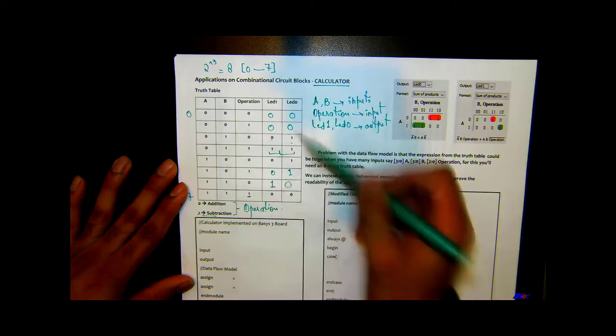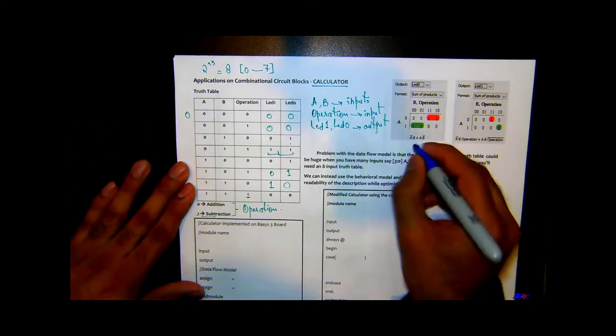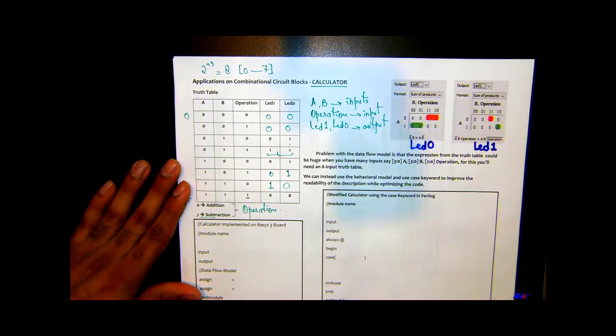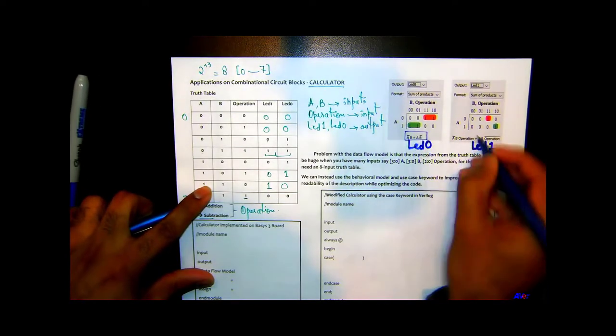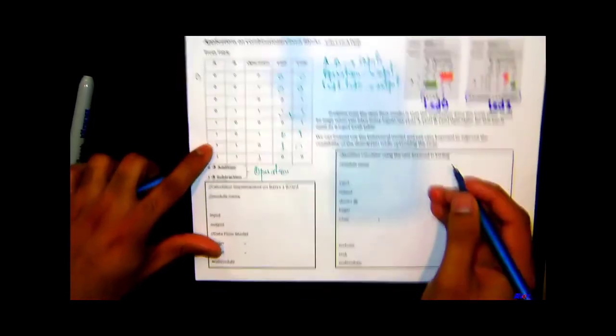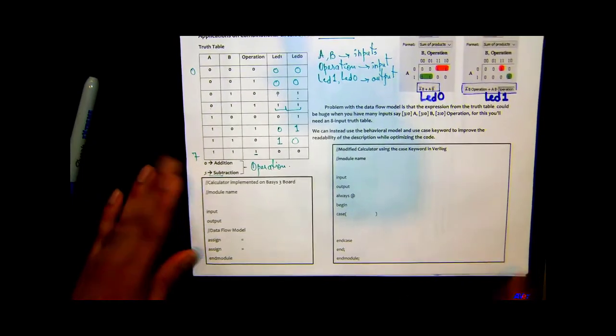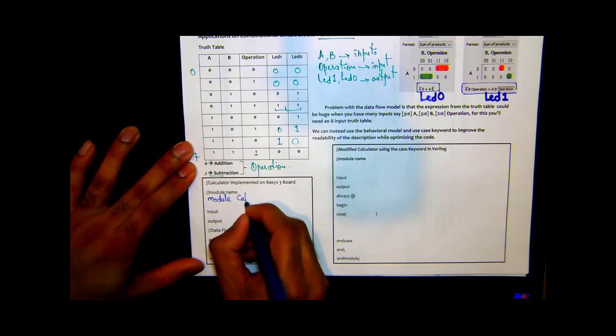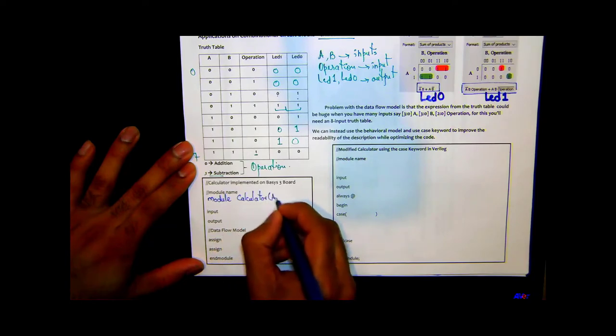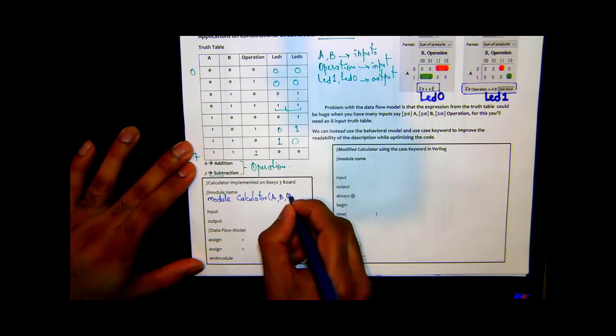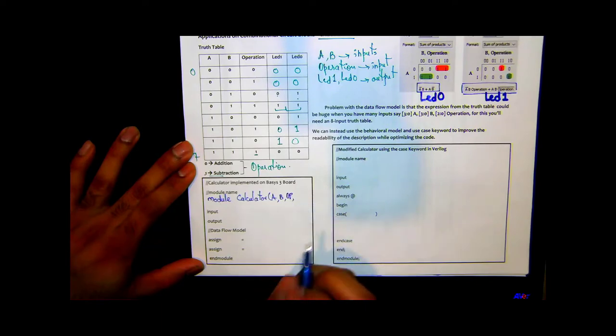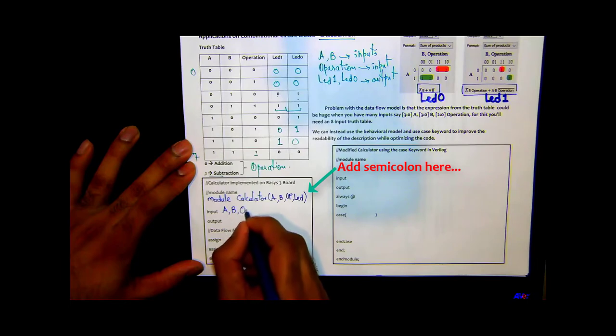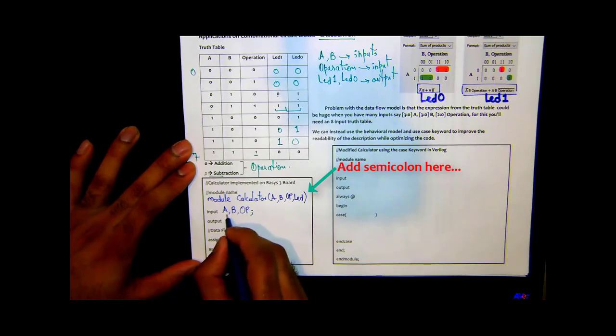I already went ahead and actually did this truth table using logisim and I came up with these expressions for LED zero and LED one. Okay, we are going to do the code here that you can actually implement on your Basys 3 board. I got these comments so we can do it real quick. Module space, I'll just say calculator, variable names A, B, for operation I'll just use OP, and I got LED. So inputs are going to be A comma B comma operation OP semicolon, and the output is going to be - I can just declare an array here - so LED.